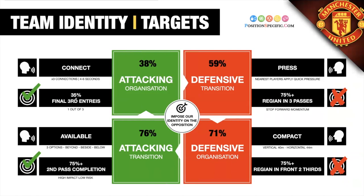Starting with team identity and targets: it was very 50-50 when imposing our identity on the opposition. Looking at the defensive transition, unfortunately this was the lowest it's been throughout the season. It wasn't too much to do with us — Man United's quality came out especially in 1v1 duels. When the transition happened and we pressed the ball, they had good players who could beat that initial press. Credit to Man United — they had players good in those 1v1 duels.